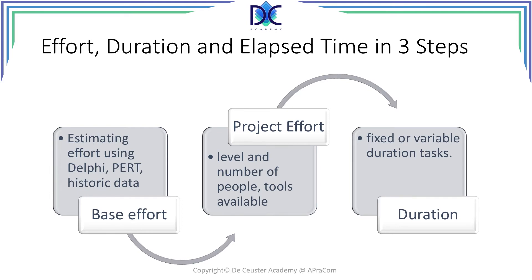Let's look at the same thing in a more graphical representation, covering the same three steps. Base effort is obtained by using the Delphi method, PERT, historical data, and other elements. We arrive at project effort by considering the level and number of people and the tools available, adjusting the base effort. Then we calculate duration from project effort depending on fixed or variable duration tasks, and from duration we find the elapsed time on the calendar.